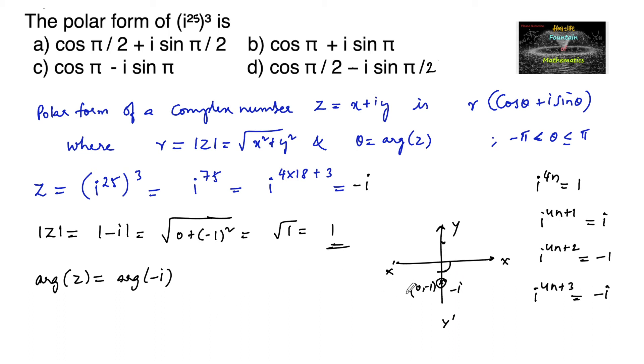So the angle can be taken minus pi by 2. We can remember argument of i is equal to pi by 2 which is in the positive direction of y axis, so our argument of minus i can be taken minus pi by 2.